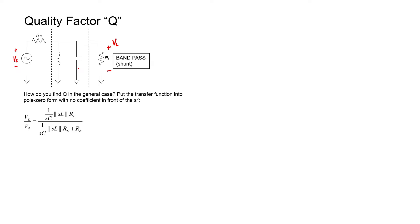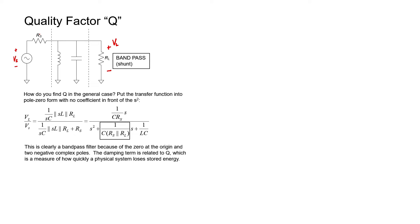We can go ahead and write the transfer function using voltage division. We have three elements in parallel: a capacitor in parallel with an inductor, in parallel with the resistor. That's what we have in the numerator. In the denominator, we just have the same three elements in series with the source resistance. If we simplify that all down and isolate the s-squared term in the denominator, we can see it's clearly a bandpass filter because we have a single s in the numerator — that is, one zero — and we have an s-squared term in the denominator, that is, two poles.